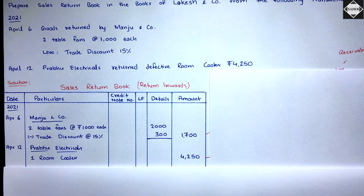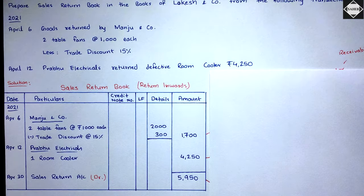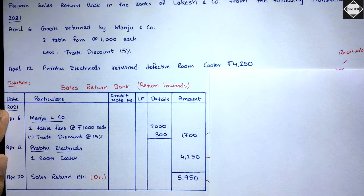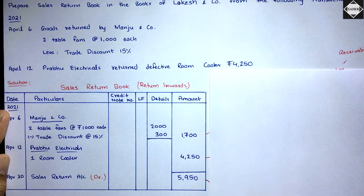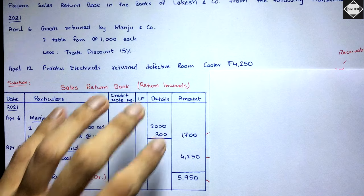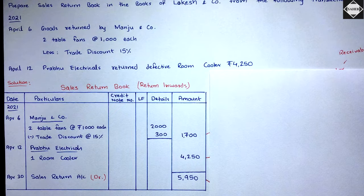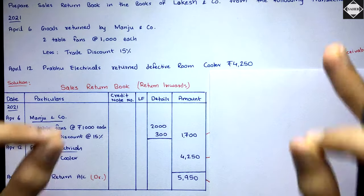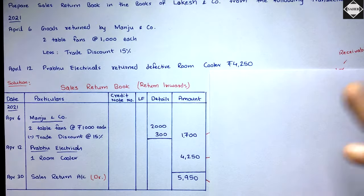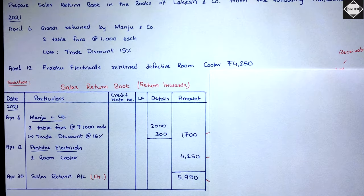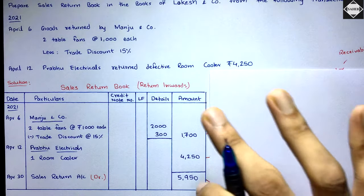At month end April 30, we make the total. Sales return account has debit balance — opposite to sales. The total is 4,250 plus 1,700 = 5,950. That's how you prepare the sales return book — it's very simple. The first ten minutes of concepts were important basic knowledge for future use.